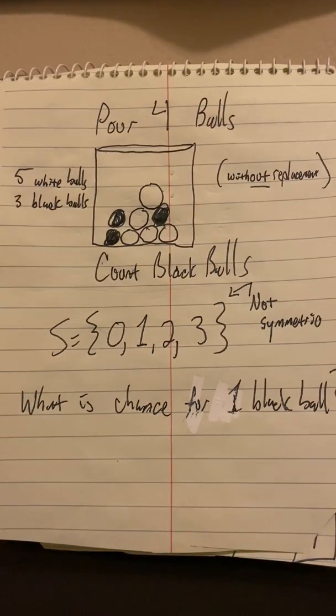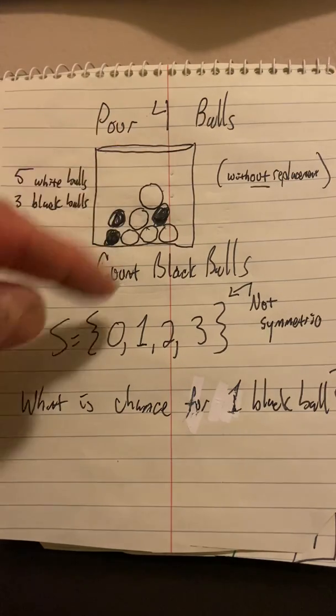Consider an experiment where we pour out balls from an urn containing a set of balls, white and black, and we count the number of black balls. This type of problem is an abstraction for sampling from a population. In this particular problem, we have five white balls and three black balls in a population of eight balls. These are characteristics like maybe male and female, Republican and Democrat, that sort of thing. And this is the population here.